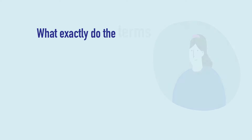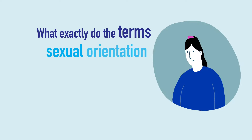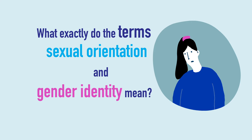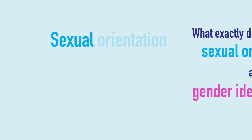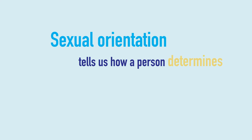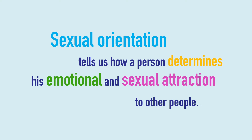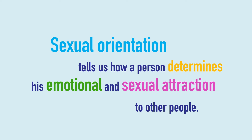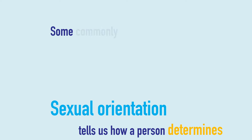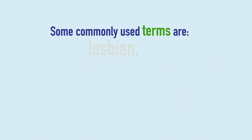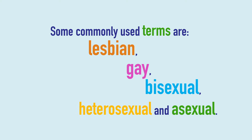What exactly do the terms sexual orientation and gender identity mean? Sexual orientation tells us how a person determines his emotional and sexual attraction to other people. Some commonly used terms are lesbian, gay, bisexual, heterosexual, and asexual.